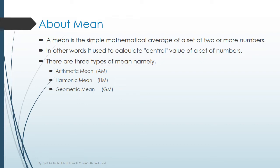There are three types of means, namely: arithmetic mean denoted as AM, harmonic mean denoted as HM, and geometric mean denoted as GM.